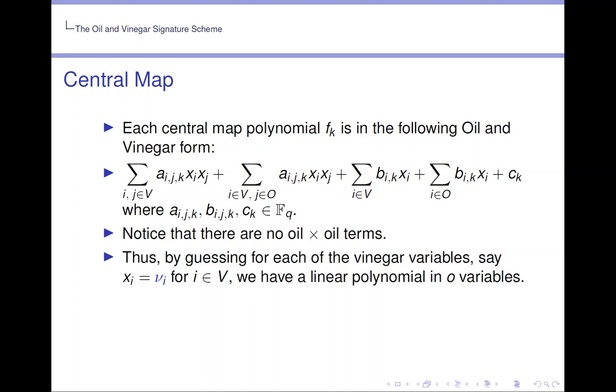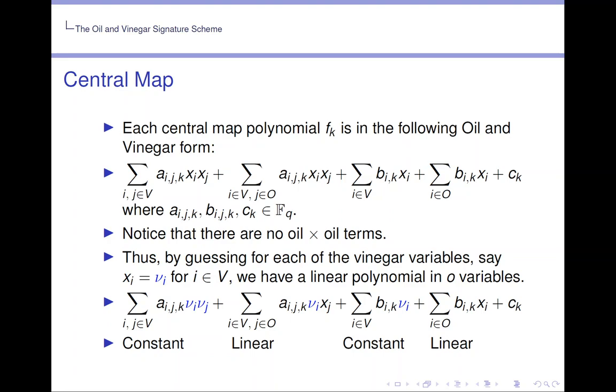Thus, by guessing for each of the vinegar variables, say that x_i equals ν_i for i in V, we have a linear polynomial in o variables. So here's us plugging in that guess, and we see that the first sum is constant, the second is linear in the oil variables, the third sum is constant, and the fourth sum is linear.